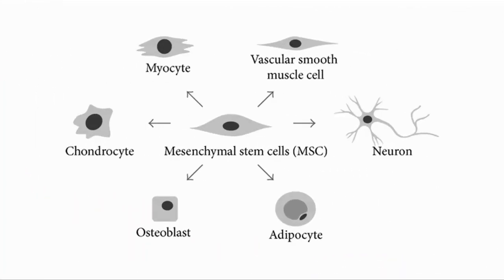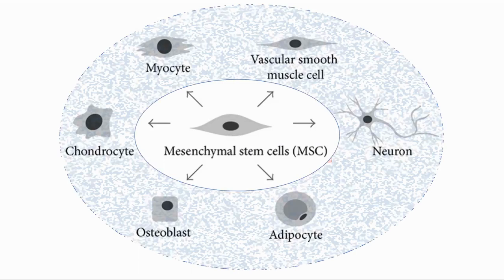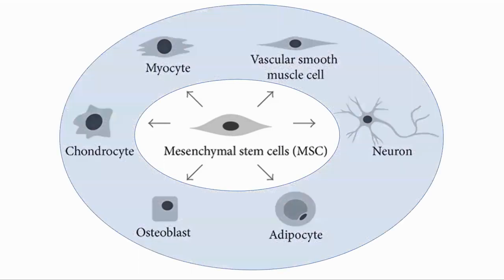There are a couple of things I would like to explain from the abstract. The first is: what are mesenchymal stem cells? These are multipotent stem cells which have the capability to become bone, fat, nerve, smooth muscle, skeletal muscle, or cartilage.